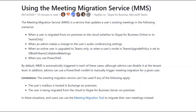The Meeting Migration Service is a cloud service that updates the user's existing meetings in the following scenarios: when a user is migrated from on-premises to the cloud, when an admin makes a change to the user's audio conferencing service settings, when an online user is upgraded to Teams only, or when a user's mode in Teams upgrade policy is set to Skype for Business with Teams collab and meetings. Or you can manually trigger this using PowerShell.